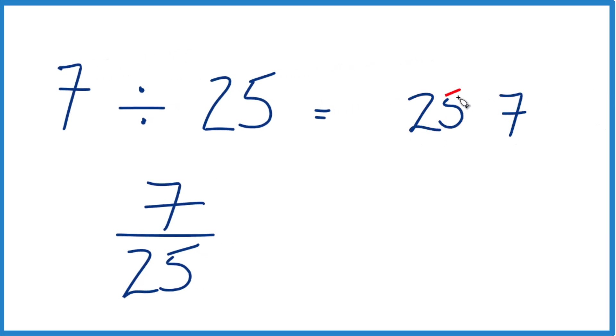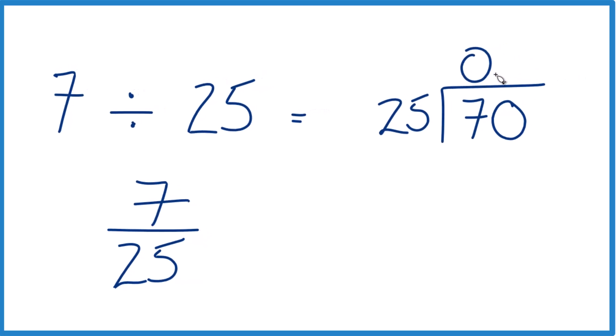and then we want to know how many times 25 goes into 7. It doesn't go into 7, but we could call it 70 if we put a 0 and a decimal point here. Now 2 times 25, that would give us 50, so we're getting closer. Subtract, we get 20.